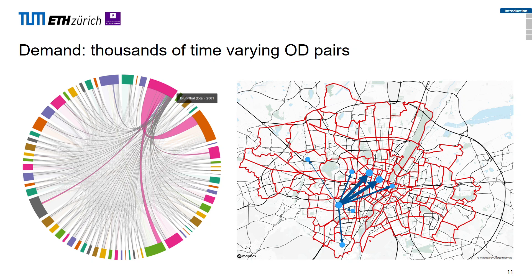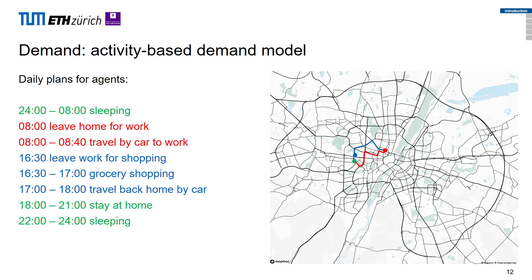Demand can come in two formats: either time-varying OD pairs, where we split the network into traffic analysis zones and have for each time interval the number of travelers per travel mode going from A to B; or an activity-based demand model, where agents have daily plans and travel from home to work across the network. A plus for SUMO is that it can handle both demand types, whereas most existing tools work with only one.